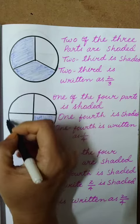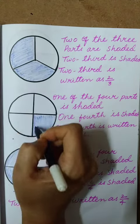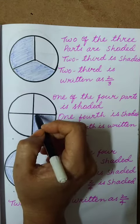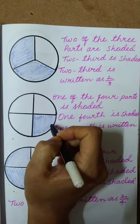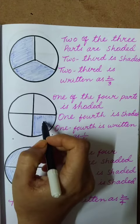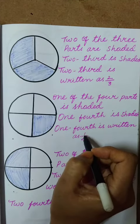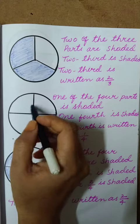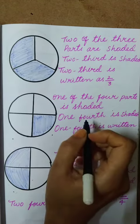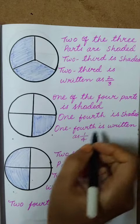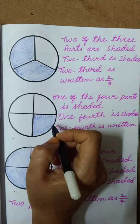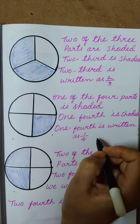One more whole part I have taken. In that I am making into four equal parts, and one I have shaded. We can write it as 1 by 4. How many we have shaded we write in the numerator, and how many total parts — four — we write in the denominator. One of the four parts is shaded; one fourth is written as 1 by 4. This is the numerator and this is the denominator.